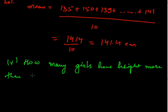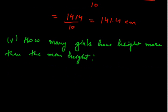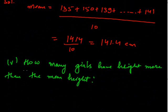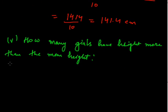Now the fifth part is how many girls have height more than the mean height. The mean height is 141.4. Now if you see the observations, we have to find how many girls have more than 141.4, which is 1, then 2, 3, 4, and 5. Five girls have height more than 141.4. So the solution will be 5 girls.